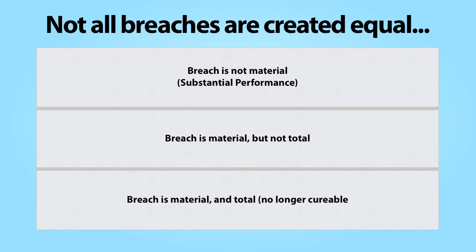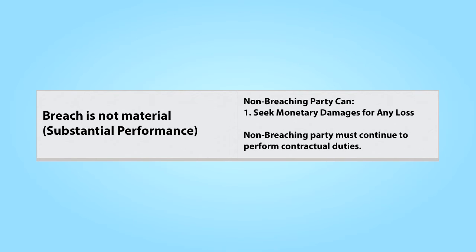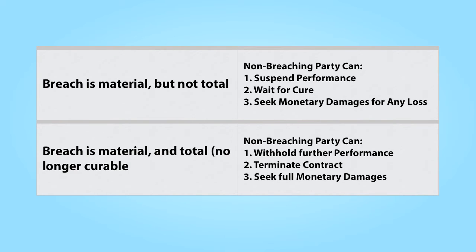If a party fails to fulfill a contractual promise, no matter how insignificant, that party has breached the contract. The non-breaching party can seek damages for any loss resulting from the other party's breach. But in general, the non-breaching party is not relieved of its future performance obligations under the contract. In the case of minor breaches, that party must continue to perform its contractual duties. When a breach is more serious — that is, when the breach is determined to be material — the non-breaching party is permitted to take additional steps in response. Not only can that party seek damages for any loss resulting from the breach, but it can also suspend its further performance obligations under the contract and wait for the breaching party to cure the breach.